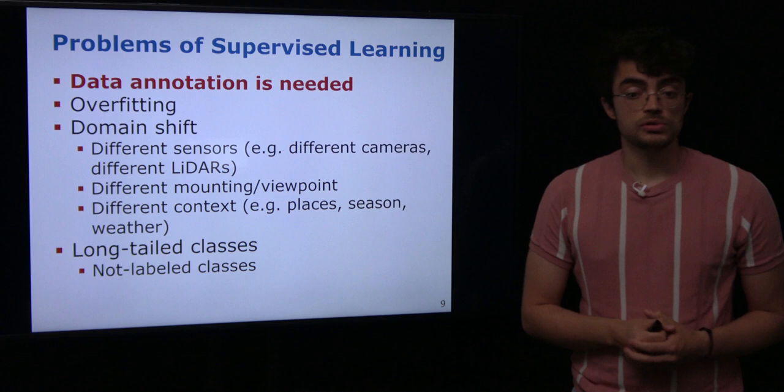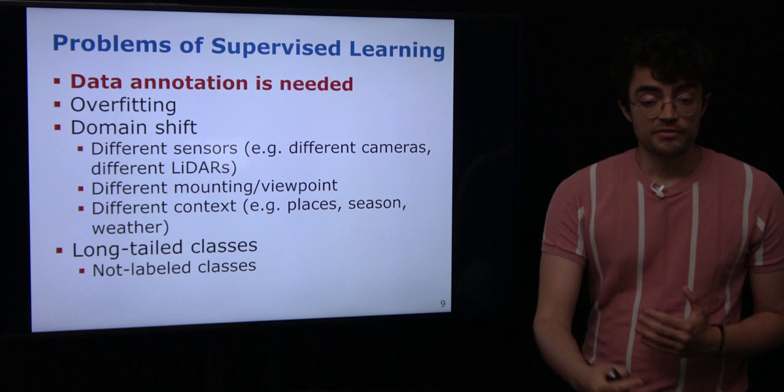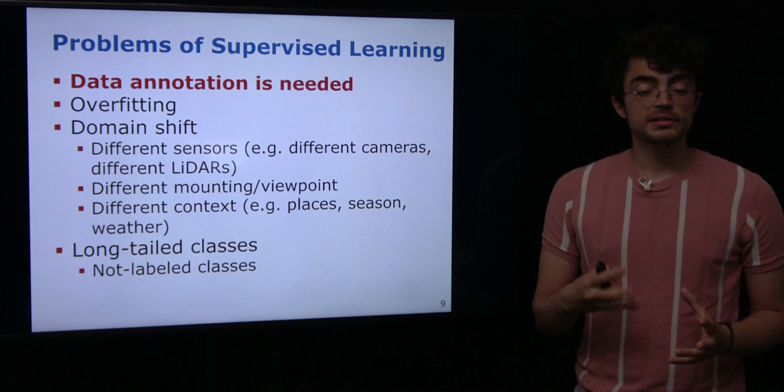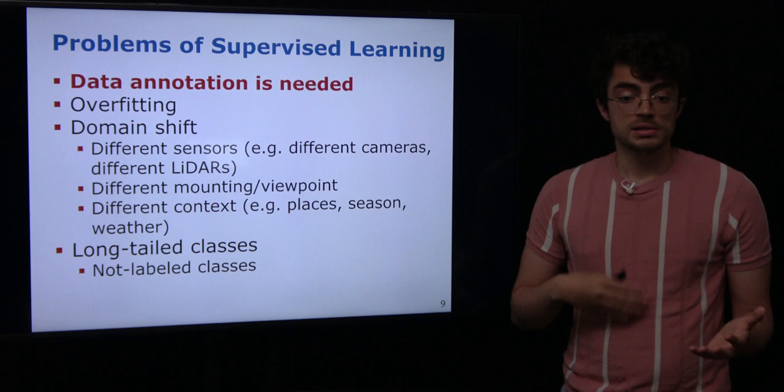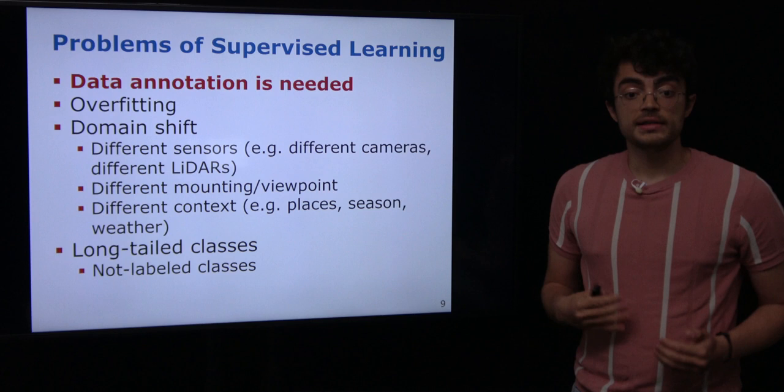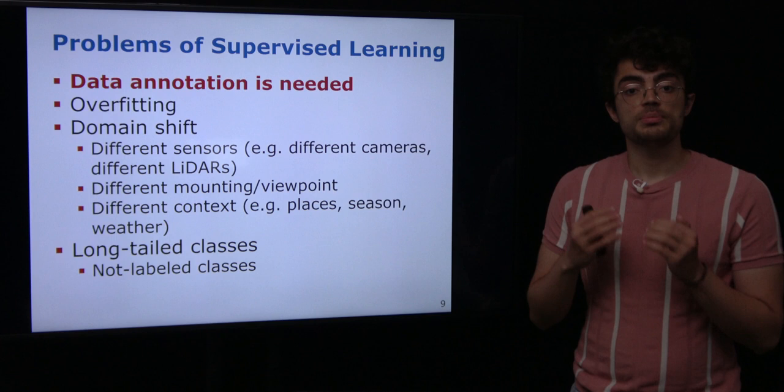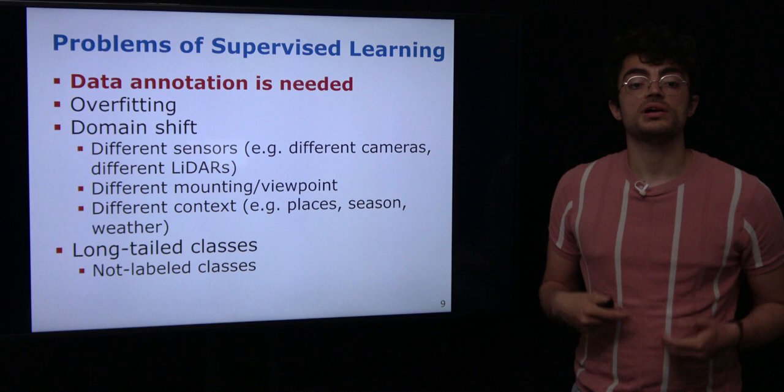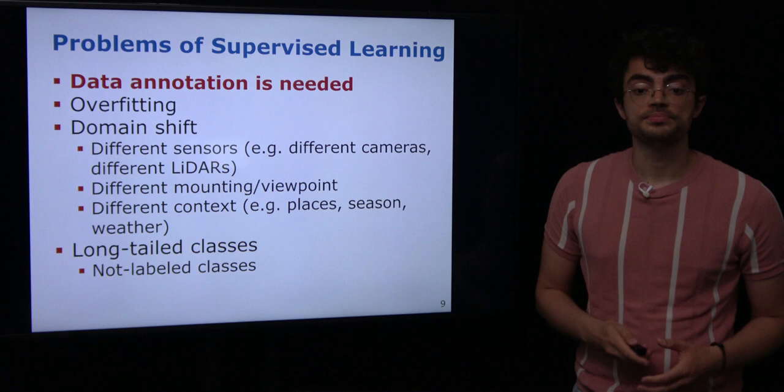Besides all of that, we may also have the problem of long-tailed classes. We cannot label everything in the world, so we have a set of scans as our training set, and we define the classes we are labeling. But some real-world objects will not be in the training set, which means we don't know how the model will perform when a new object that was not labeled appears in the scene during deployment. We need to account for those long-tailed classes.